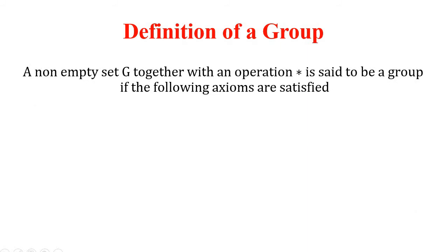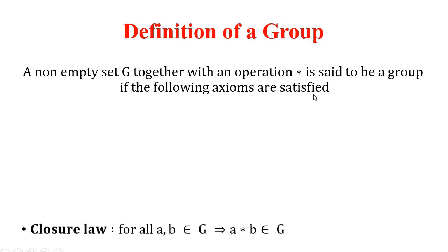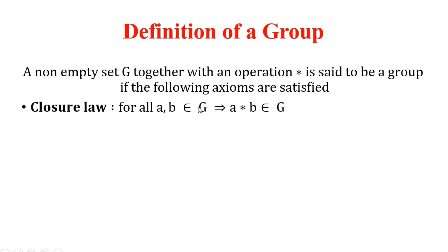Now let us define the group. A non-empty set G together with an operation star is said to be a group if the following axioms are satisfied. The first property is the closure law: for all a, b belonging to G implies a star b belongs to G. Here star can be addition, multiplication, or any other mathematical operation.